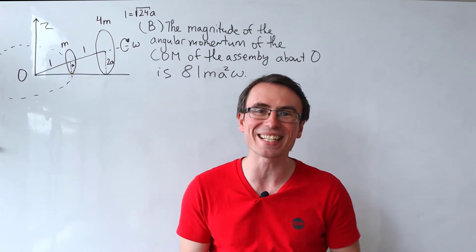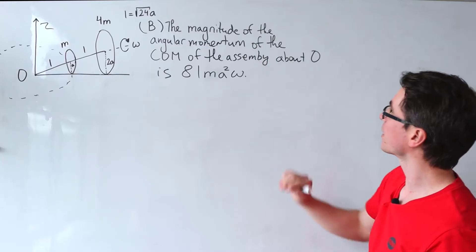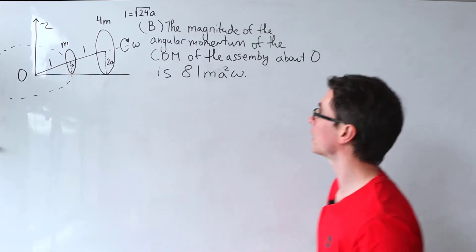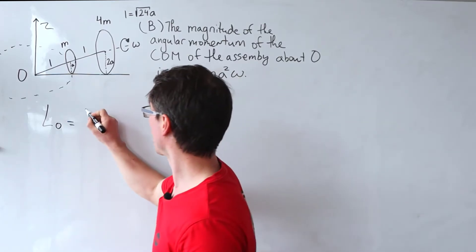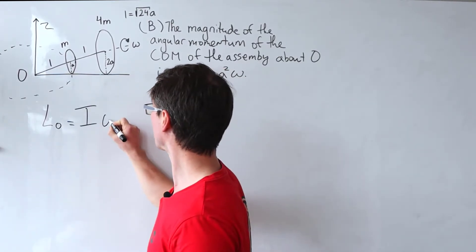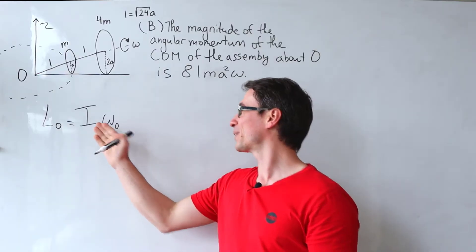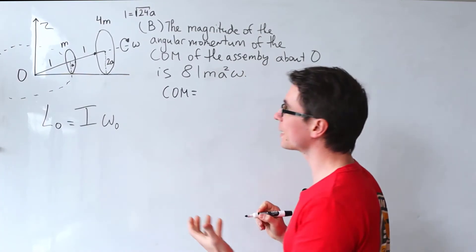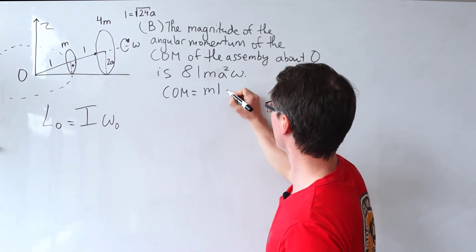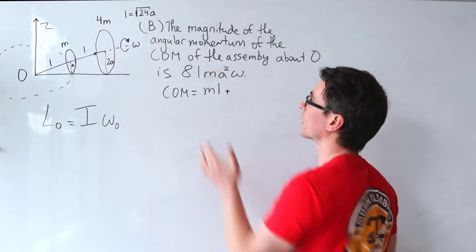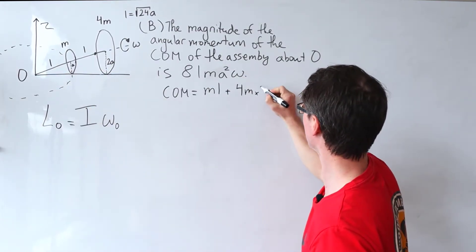On to part B — in my opinion the hardest part. We need to check if the magnitude of the angular momentum of the center of mass of the entire assembly about the origin equals the given expression. L_O = I_cm · ω_O. Starting with the center of mass: using the formula, it's (m·l + 4m·2l) divided by 5m.